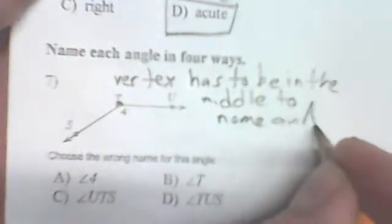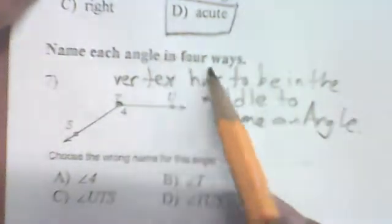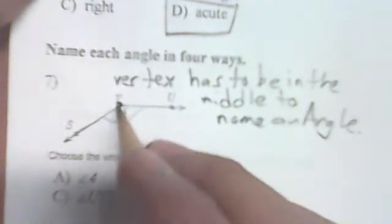The vertex is T, and the vertex has to be in the middle when naming an angle. So angle T could work, and UTS works because the vertex is in the middle. But this angle here — its vertex is T, and T is not in the middle in this name, therefore it is a wrong name for the angle.